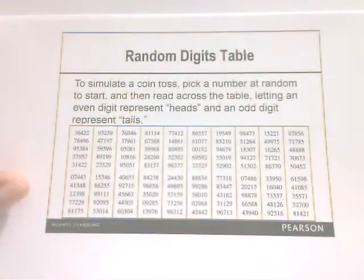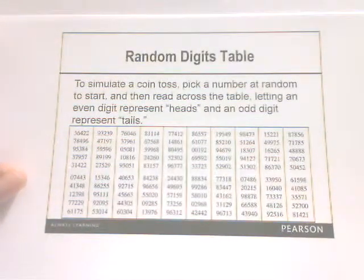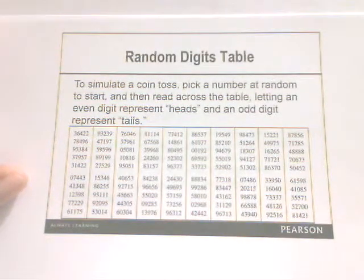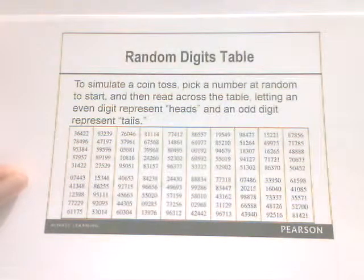If we want to simulate a coin toss, we can pick a number at random to start and then read across the table, letting an even digit represent heads and an odd digit represent tails.